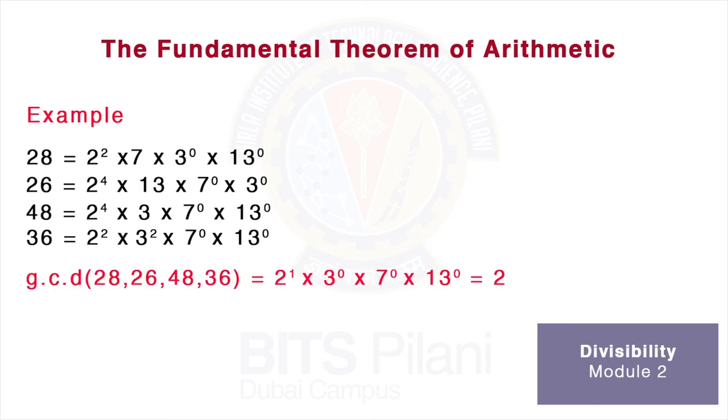And for LCM we take the largest power of each prime and multiply. This gives us the LCM as 13104.